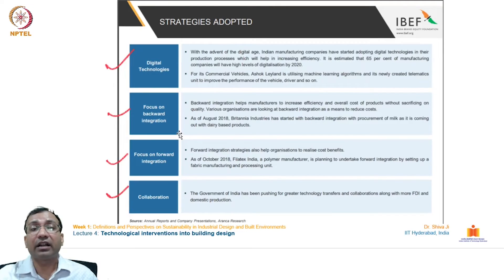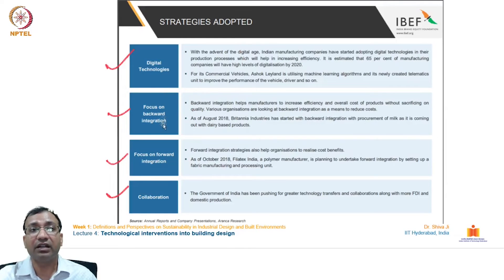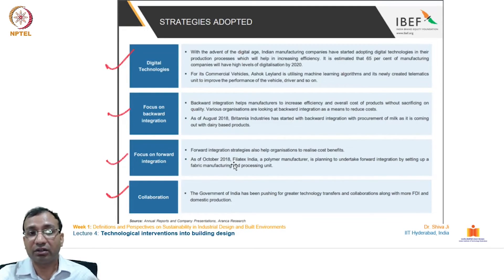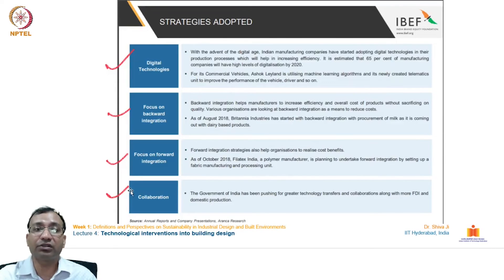The strategies adopted to boost this level of economic success include using digital technologies, telecom, internet-based communication, and faster telecom communication. India is also focusing on backward integration — integrating other strata of society that are less able to cope. It is also trying to establish collaborations between technological houses, research institutions, and different countries for R&D partnerships.